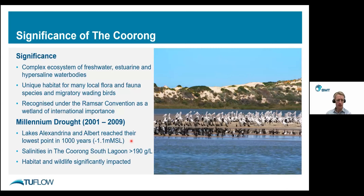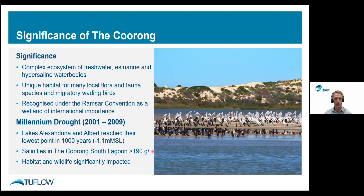The millennium drought had major impacts on inflows from the Murray River — Lake Alexandrina reached its lowest point in about a thousand years. Freshwater inflows into the Coorong were basically stifled, and we also saw significant sedimentation around the Murray River mouth. Without continuous around-the-clock dredging during the drought, the Murray River mouth would have most certainly closed over. Even with these mitigation measures, salinities in the South Lagoon reached quite extreme levels — over five times ocean salinity — with significant impacts to habitat and wildlife.